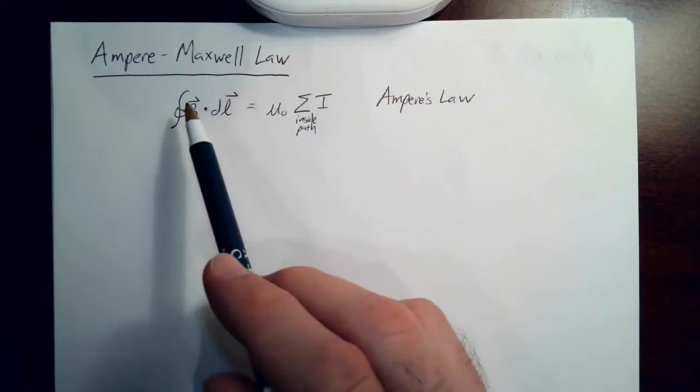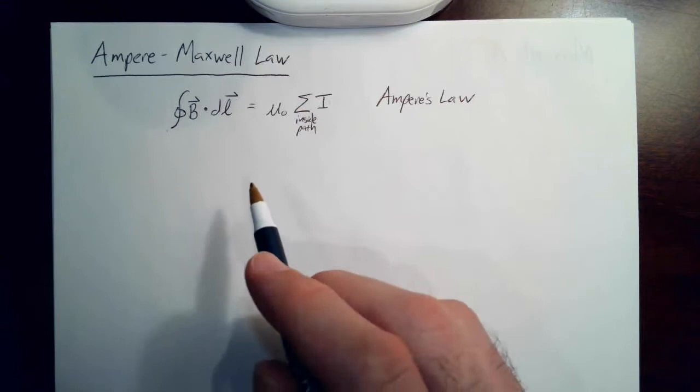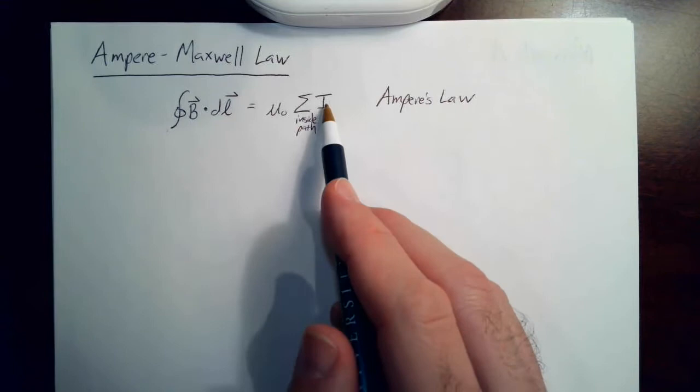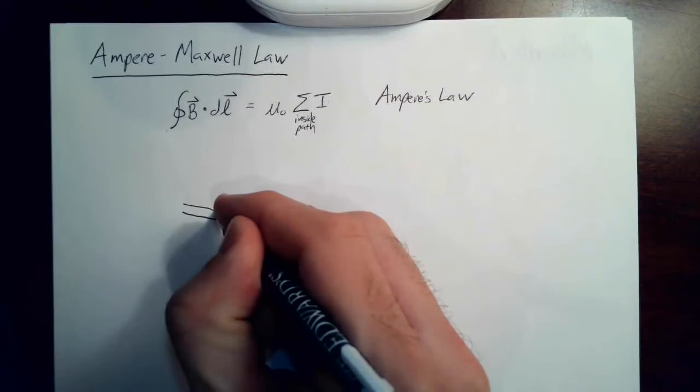We create a closed path and look at how much current is passing through that path. Remember that for the closed path, we stretch a soap bubble across the path and look for the currents that pierce that soap bubble.